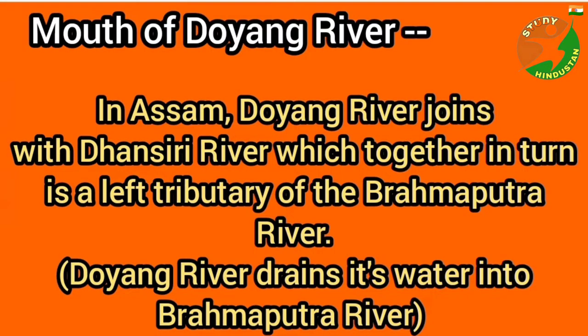Mouth of Doyang river: in Assam, the Doyang river joins with the Dhansiri river, which together is a tributary of the Brahmaputra river. In other words, the Doyang river drains its water into the Brahmaputra river.